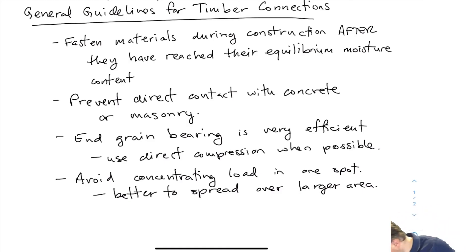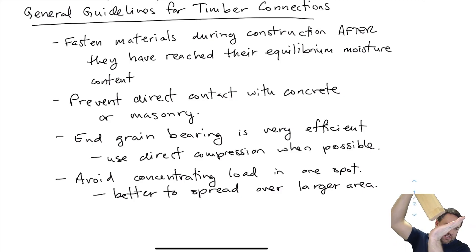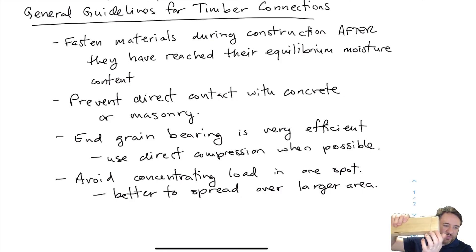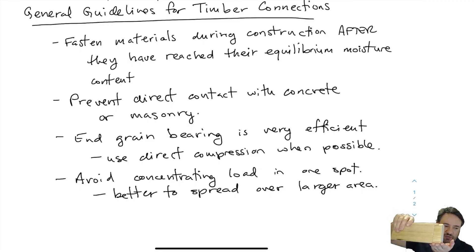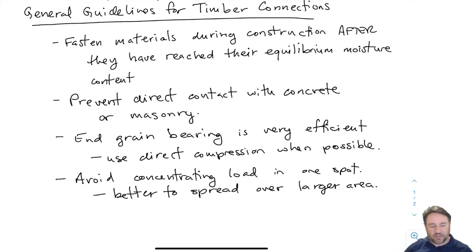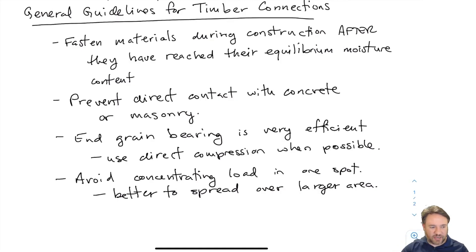The best way to load a piece of wood in connections is in direct compression — ideally compression parallel to grain. In connections, it's typically better to have most of the load transferred in bearing. For example, having a beam sit on some kind of seat is really the most efficient way to connect it, rather than relying on shear in bolts. Compression parallel is best, but even compression perpendicular is better than relying on the splitting strength of wood.